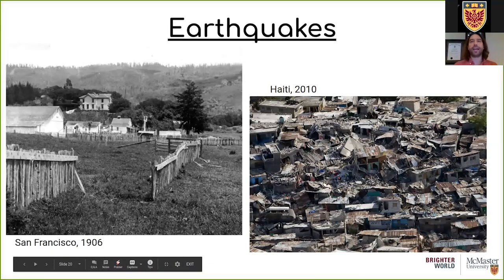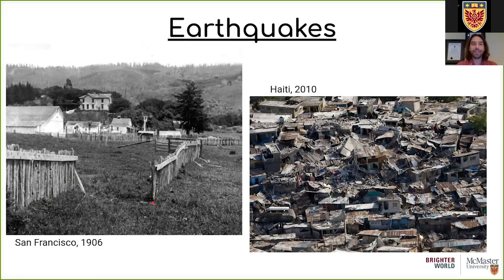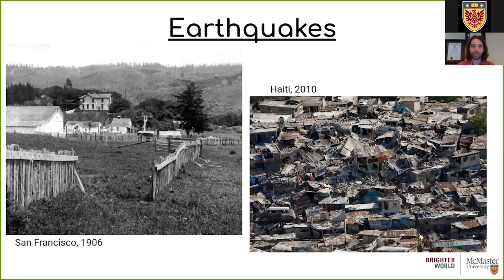Moving on to earthquakes. Here's an image from the San Francisco earthquake of 1906 showing a fence with a four-foot displacement — the farmer didn't build it that way; the plates sliding past each other caused that offset. Here's the 2010 Haiti earthquake, which caused devastating destruction due to the lack of earthquake-resistant building codes. Japan, by contrast, is well-prepared because its building codes require structures to withstand earthquakes. Haiti has still not fully recovered ten years later.